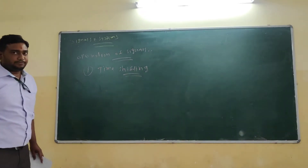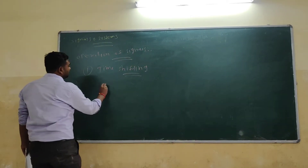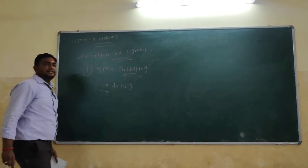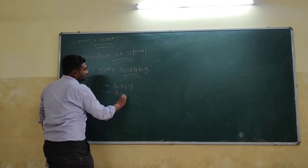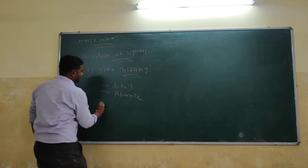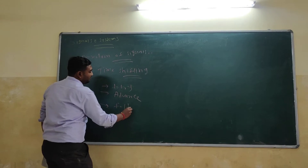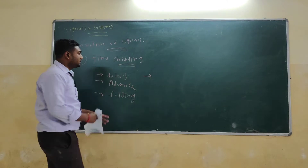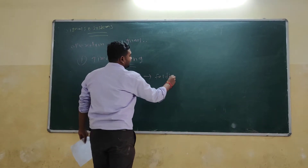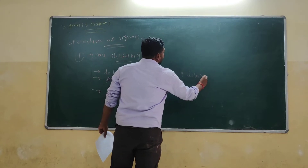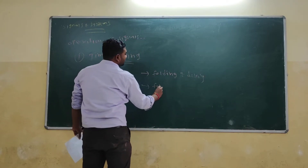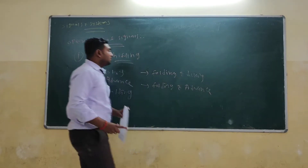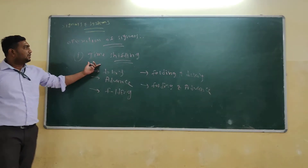In that type of signal, there are different types. The first one is delay, the second one is advance, the third one is folding. Then there are another two points: the combination of folding and delay, and the last one is the combination of folding and advance. So these are five types of time signal properties.